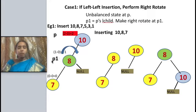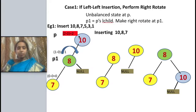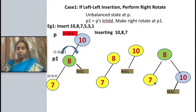At the unbalanced node we mark it P. The child of P is named P1. We perform a right rotation between P and P1, making P1's right child equal to P. Since P1 has no right child here, we can place node 10 directly. The tree now becomes: 8 as root, left child 7, right child 10.